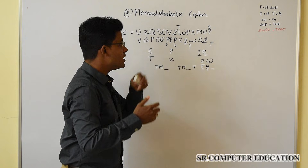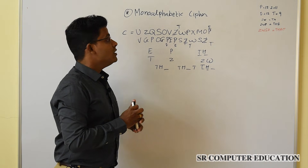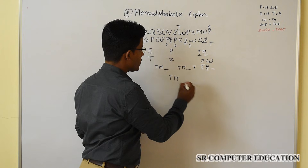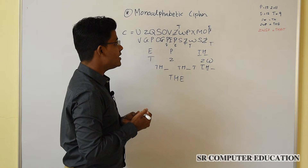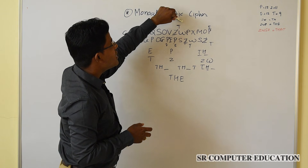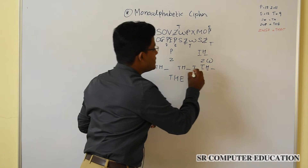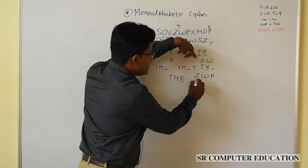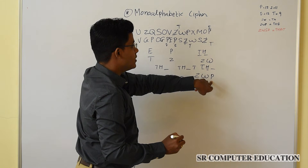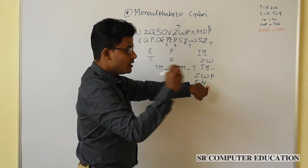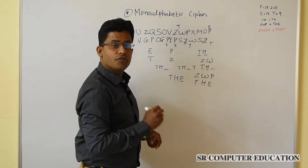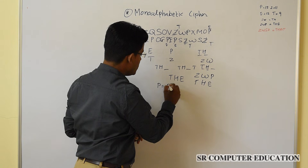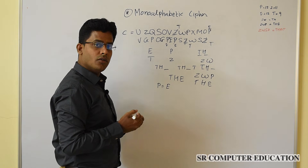Again, use the knowledge of English language: the most common three letters appearing together — a trigram — is T, H, E, which spells 'the'. In our cipher text, the most common three letters appearing together are Z, W, T. Since we already know Z is T and W is H, we get confirmation that T in the cipher text is actually E, giving us the substitution for P as well.